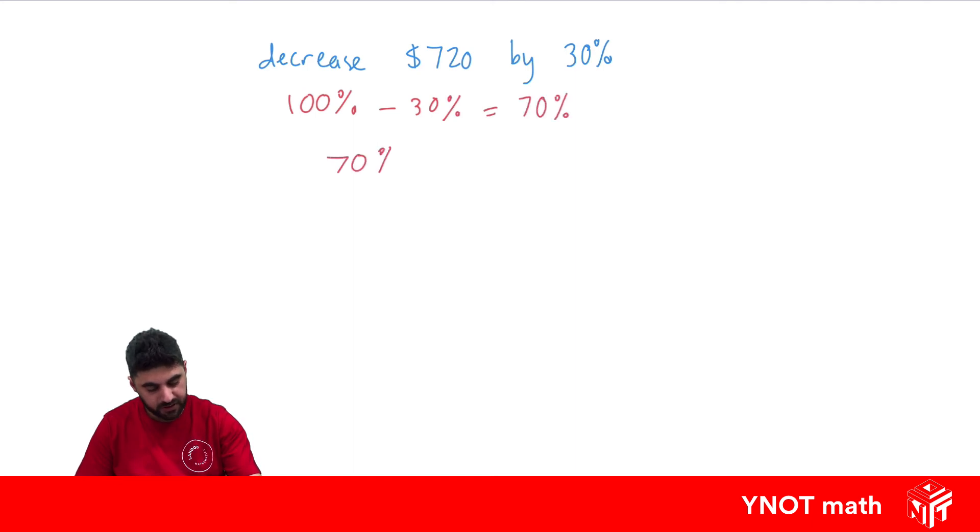Now we just want to find 70% of the thing we want to decrease by. So 70 over 100 times what we want to decrease, which is 720. And this gives us an answer of $504.